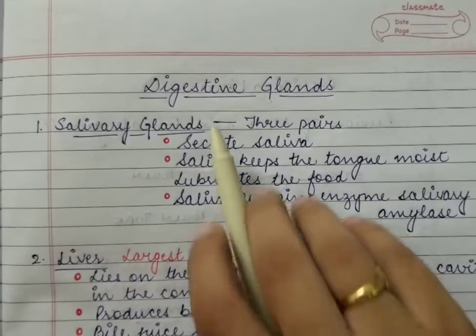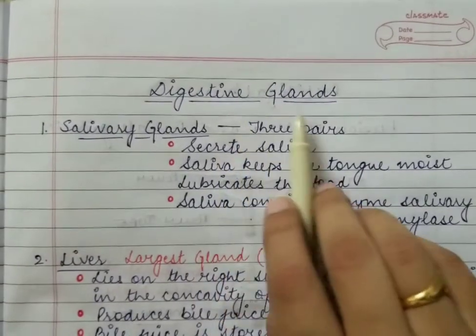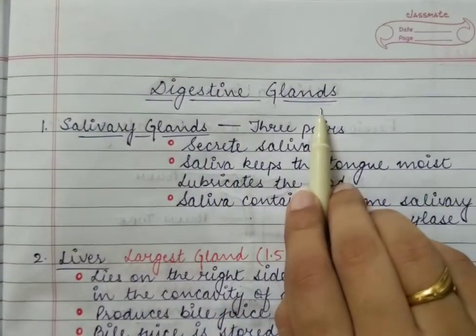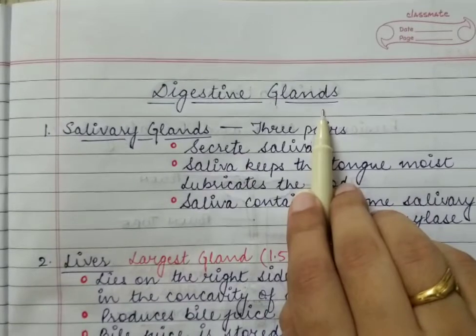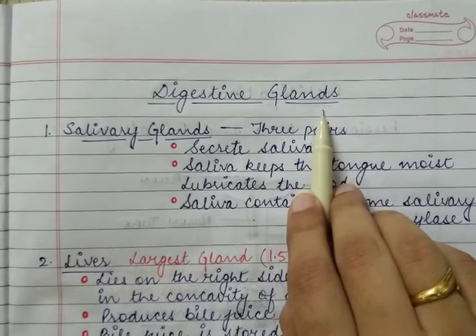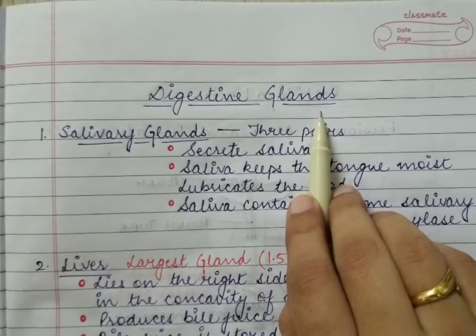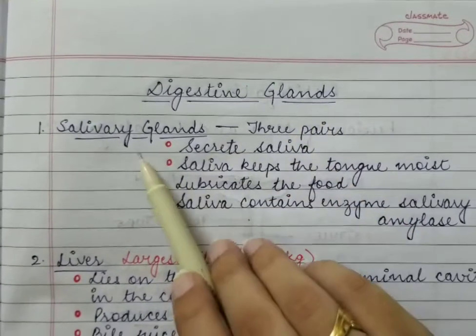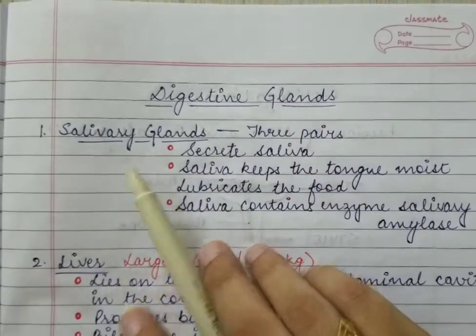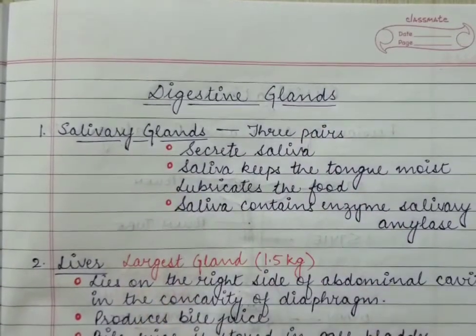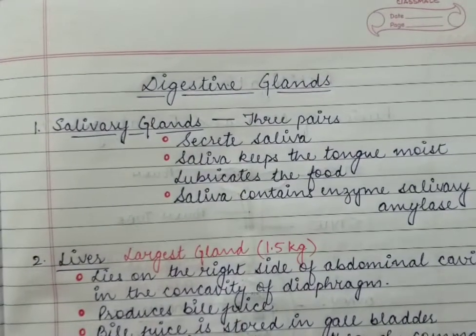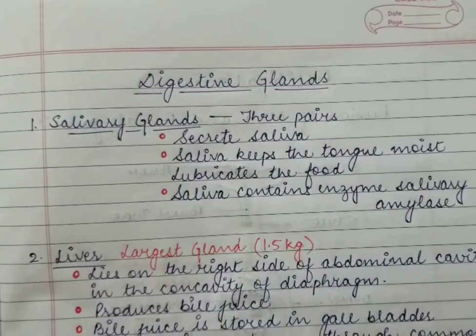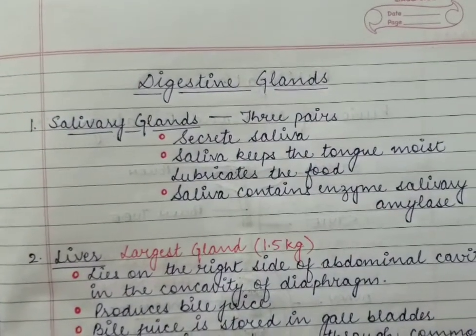Hi everyone, today we will study about digestive glands. There are three glands which are present in the digestive system: the salivary glands, liver, and the pancreas. One by one we will discuss them in detail.